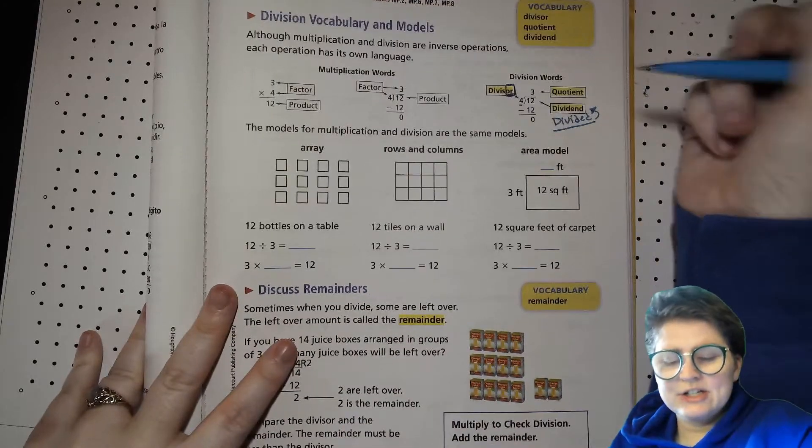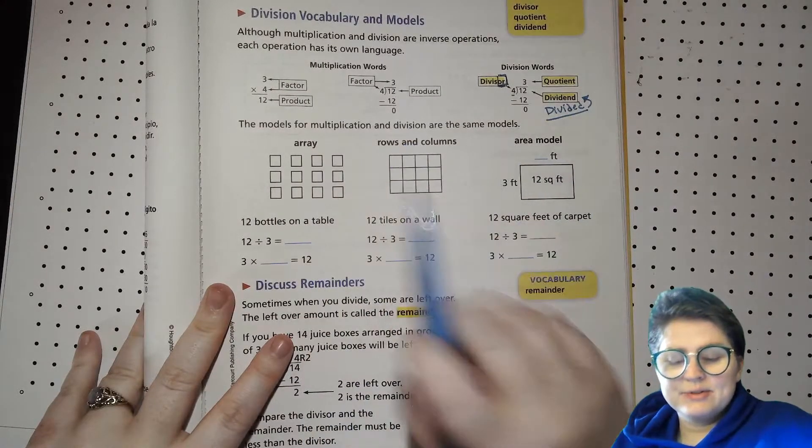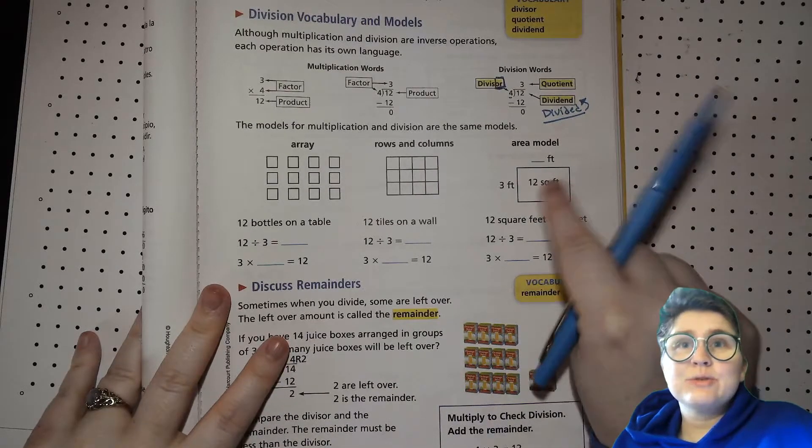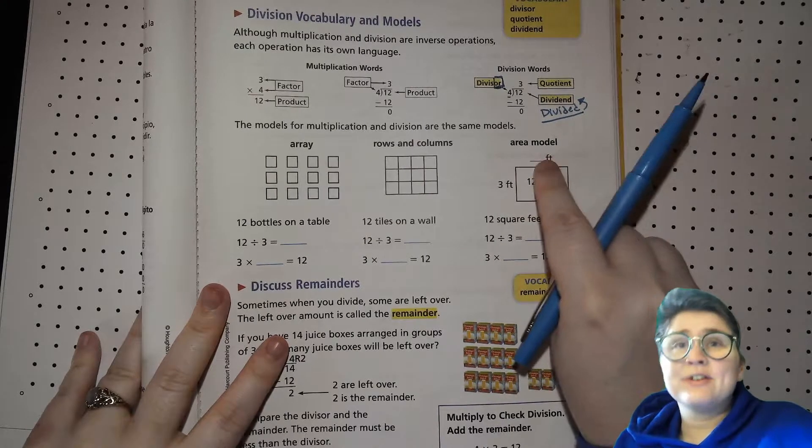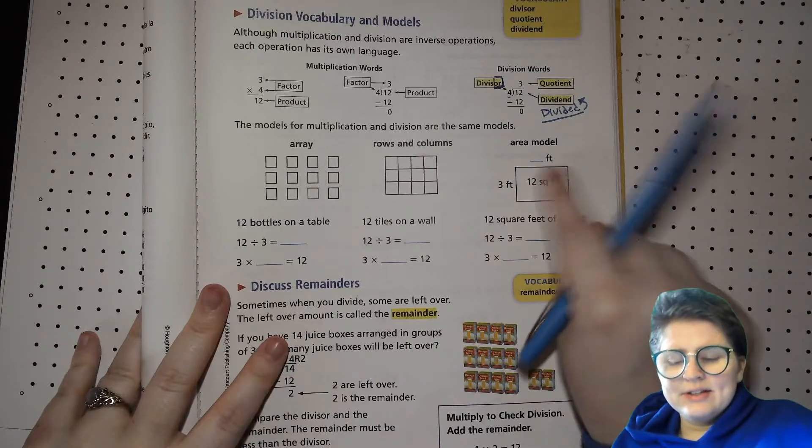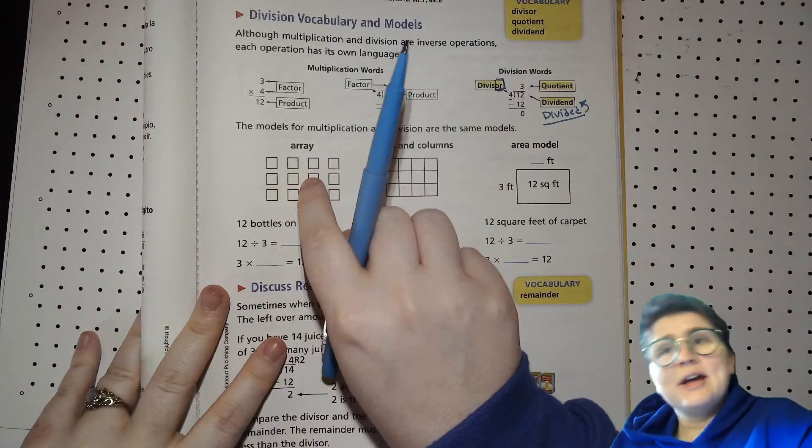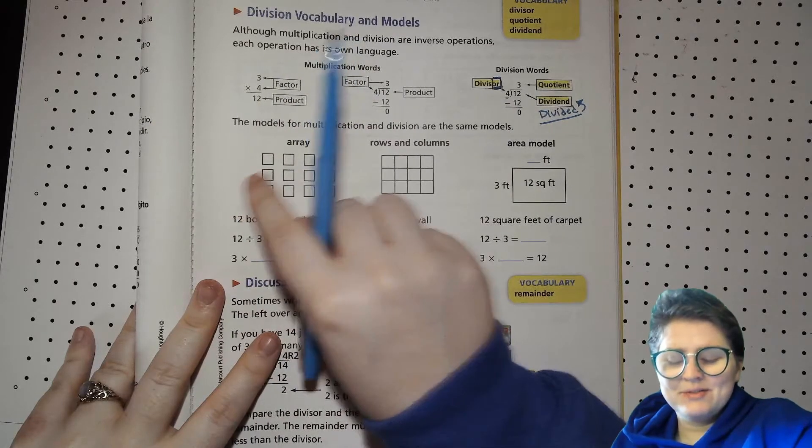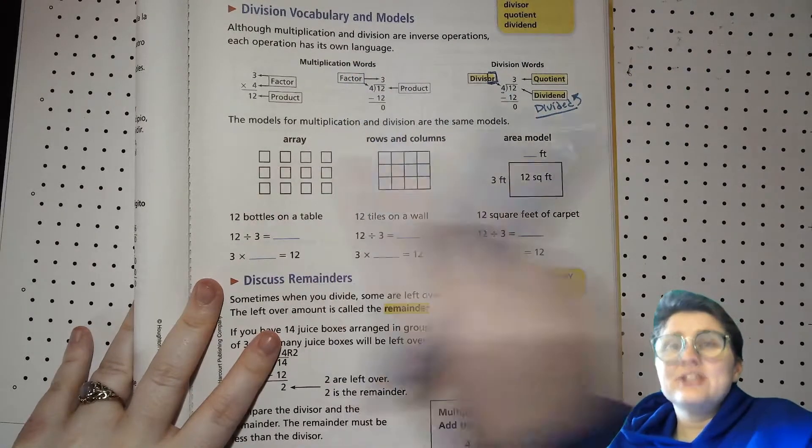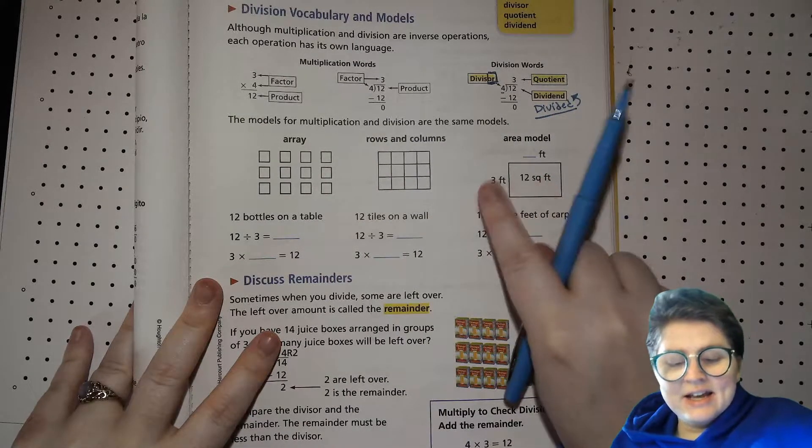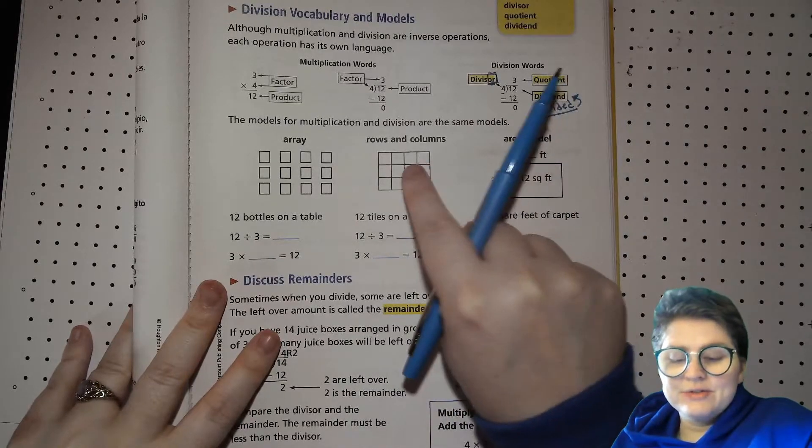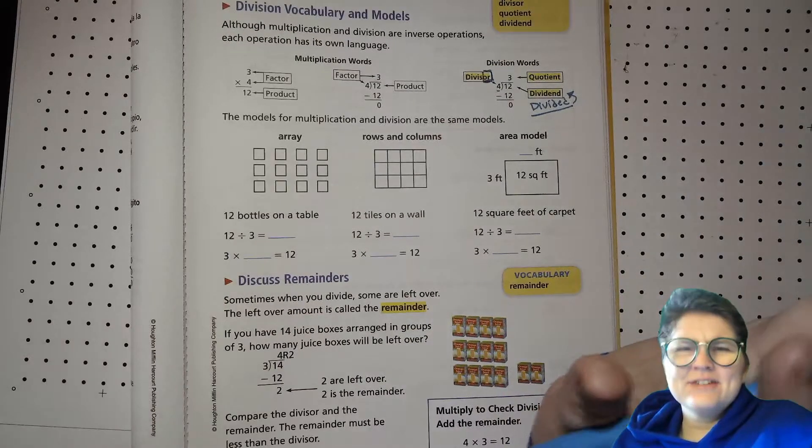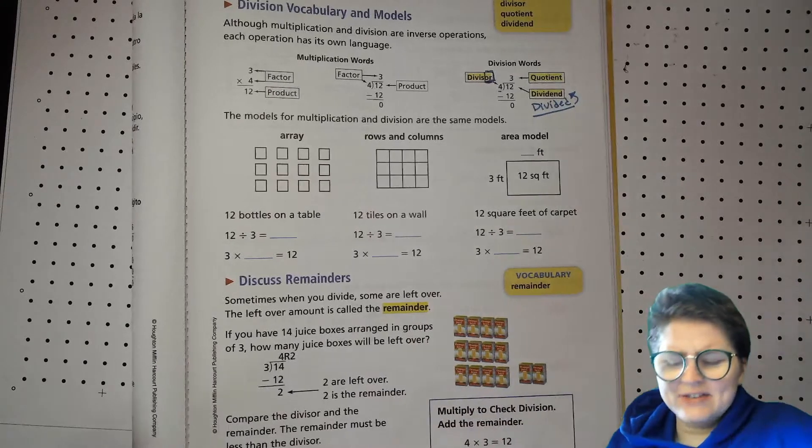The models for multiplication and division are the same models. You can have arrays with rows and columns, you can just have rows and columns, or you can have area. The difference is, usually with division, you'll know what the area is and you're trying to figure out one of the lengths. You'll know the total number of squares in an array, but you'll only know one of the factors, but not the other one. And you use your knowledge of the dividend and the divisor to find the quotient. Or you could say, in other words, you can use your knowledge of the product and one of the factors to find the other factor. It sounds complicated, but don't worry. You're going to get the hang of it, I promise.